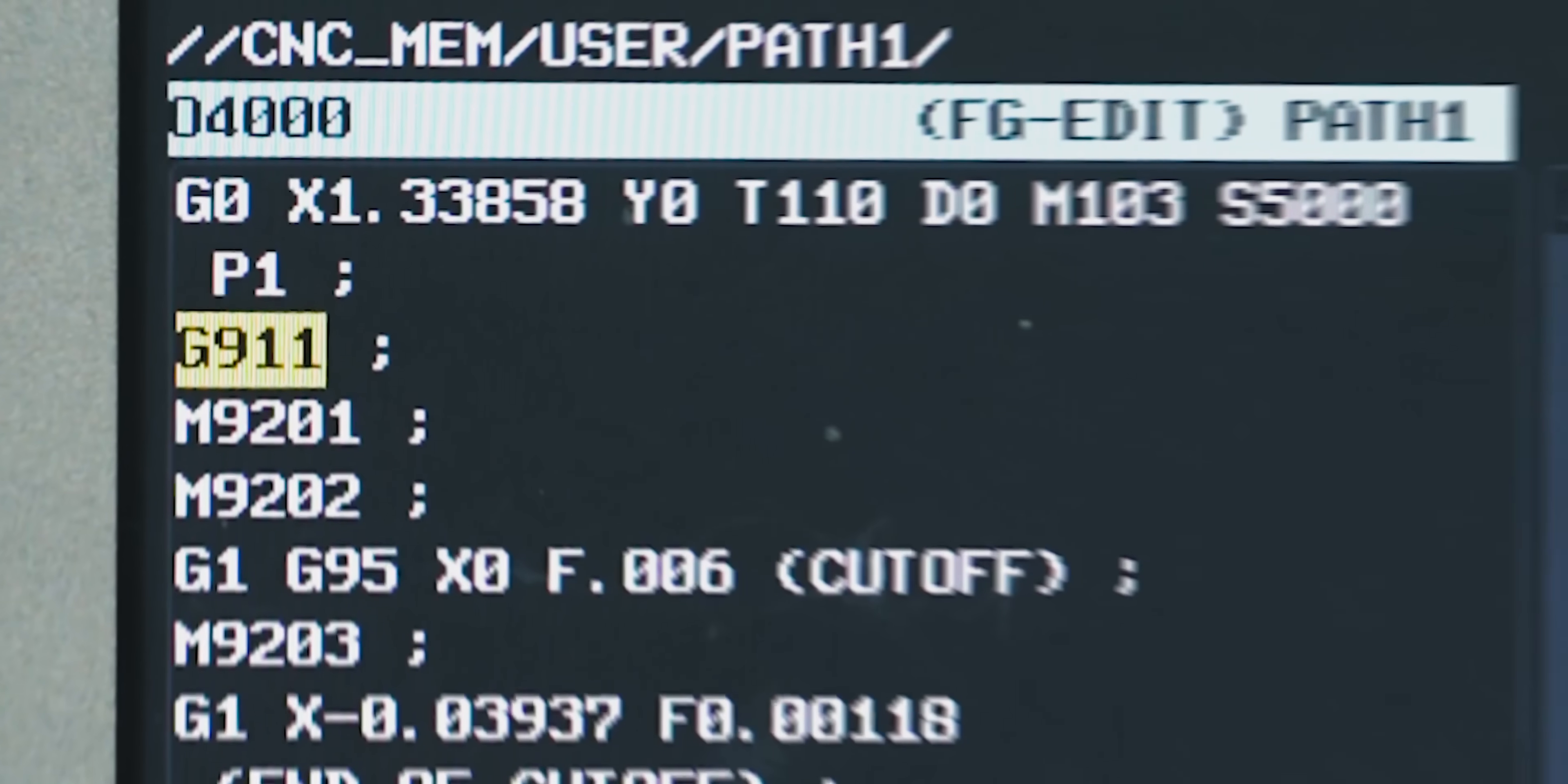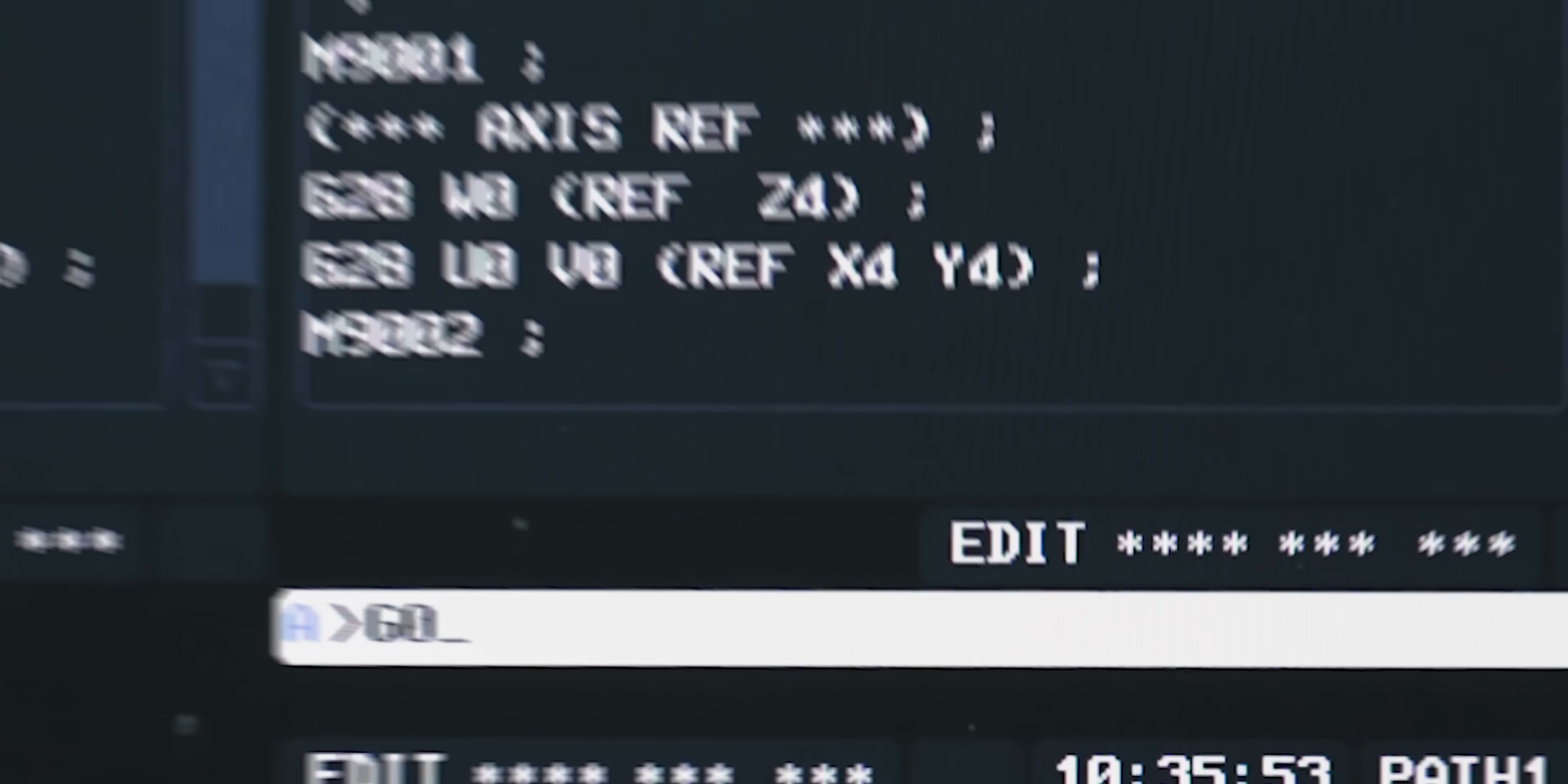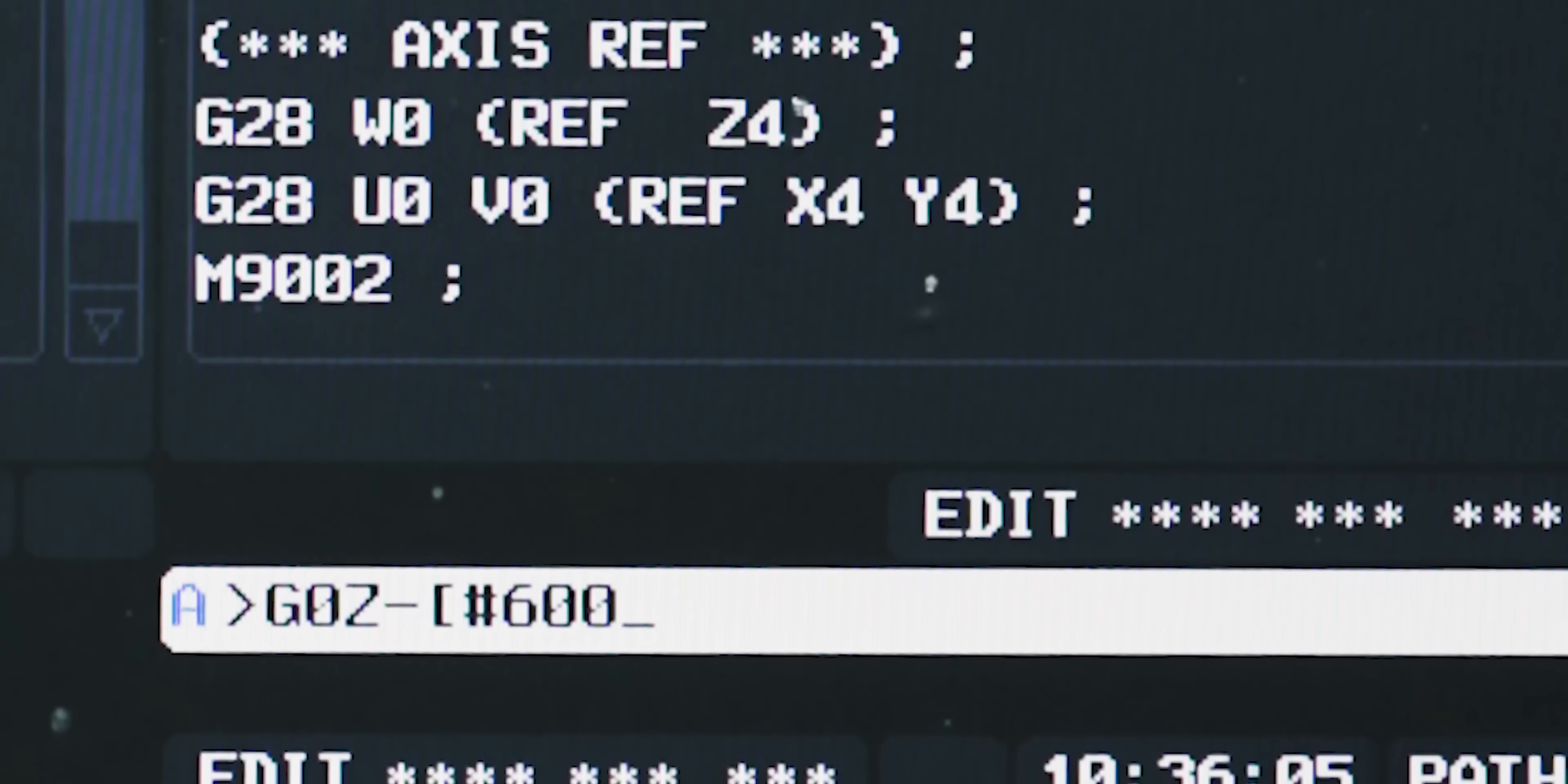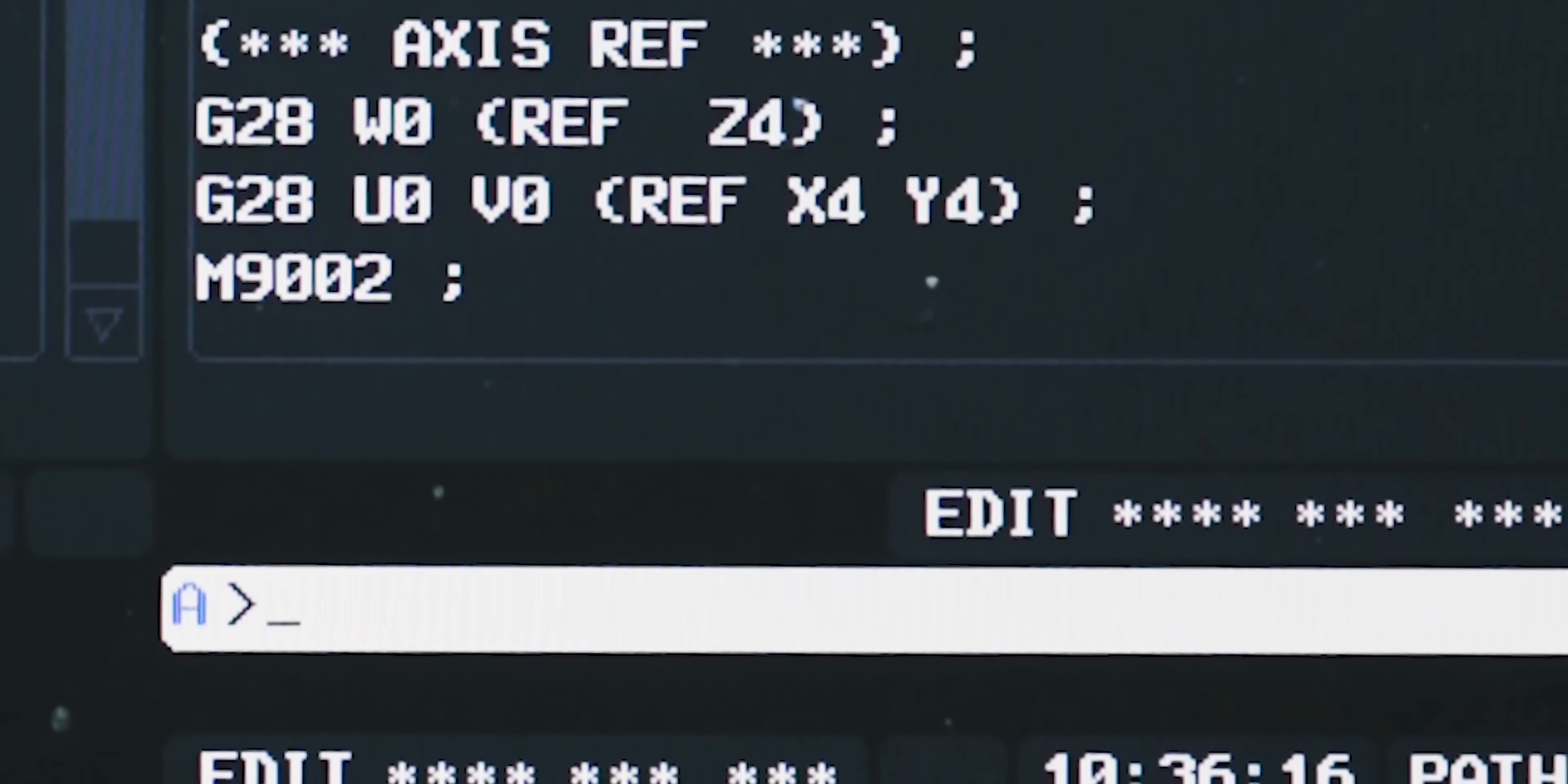Tornos G911 does everything I said - brings the cutoff up, brings the part out, everything's taken care of - but what you would want to do in this case is say something like G0 Z of minus [pound 600 + 0.787 + 0.01]. Your cutoff tool, in this case, is 0.787 which is 20 millimeter. I want to face off 10 thou on the sub, so I'll say plus 0.01. That would be pretty much the same thing as what G911 does on Tornos.